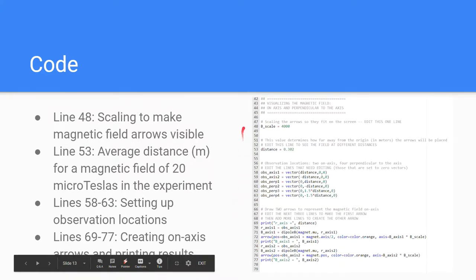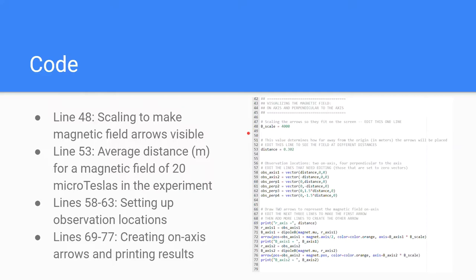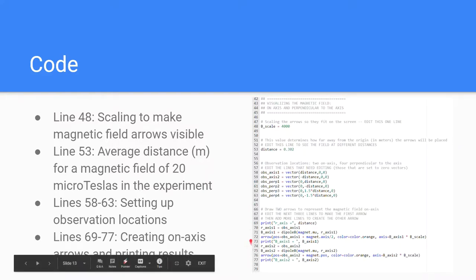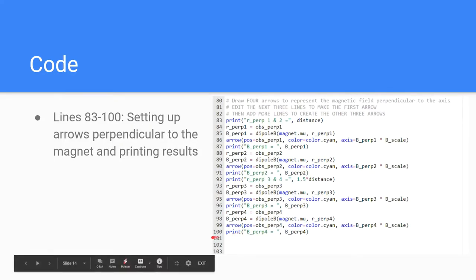Here on line 48, we have a scaling factor for magnetic field arrows to make them visible. Line 53 is a particular distance measurement from the experiment we'll be using for our various arrows. Lines 58 to 63, we set up some observation locations. And on lines 69 to 77, we create on-axis arrows and print the magnetic field at those locations. We do the same for perpendicular locations on these lines.